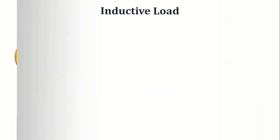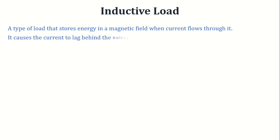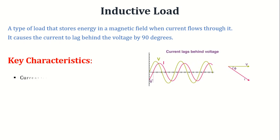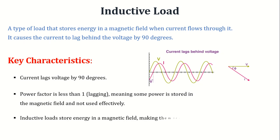Next comes the inductive load. An inductive load is a type of load that stores energy in a magnetic field when current flows through it. It causes the current to lag behind the voltage by 90 degrees. In an inductive load, the current lags behind the voltage by 90 degrees, meaning the current reaches its peak value after the voltage does. The power factor is less than 1, lagging, as some of the power is stored in the magnetic field and returned to the source, leading to inefficiencies. Inductive loads store energy in a magnetic field, making them ideal for applications like motors and transformers, but requiring power factor correction for optimal efficiency.